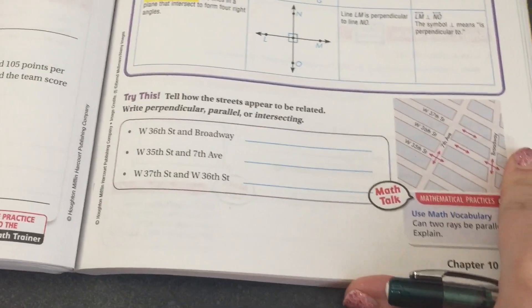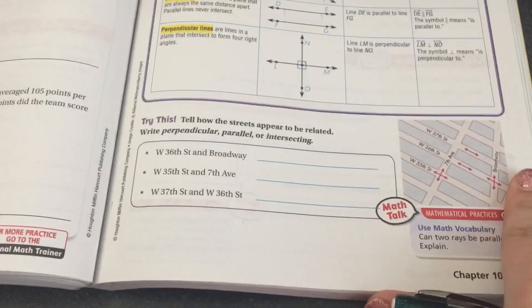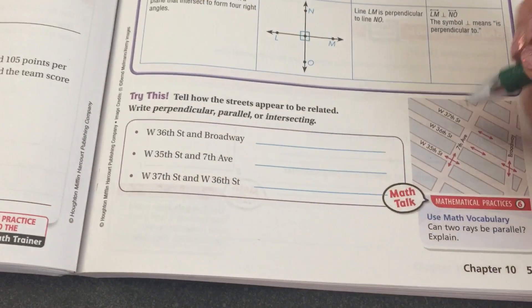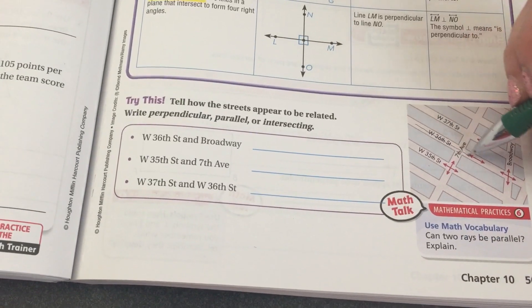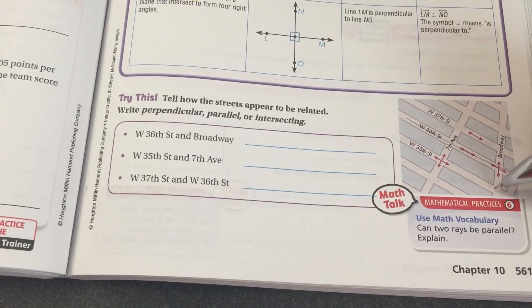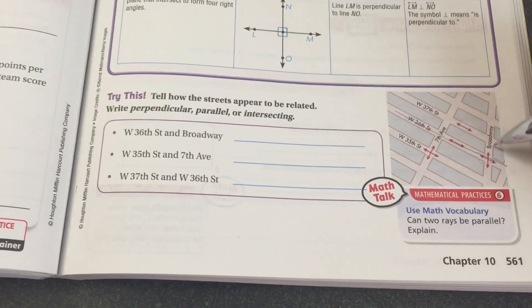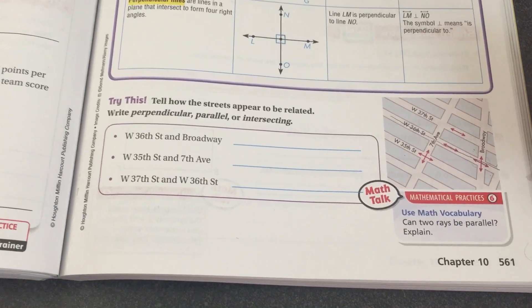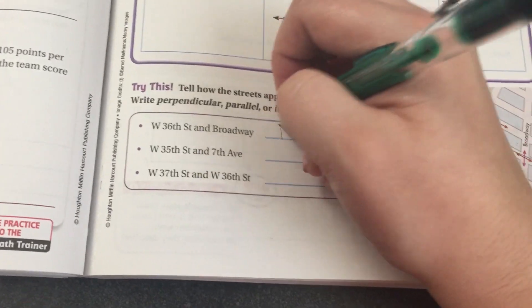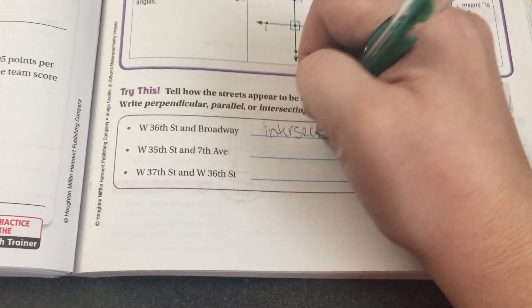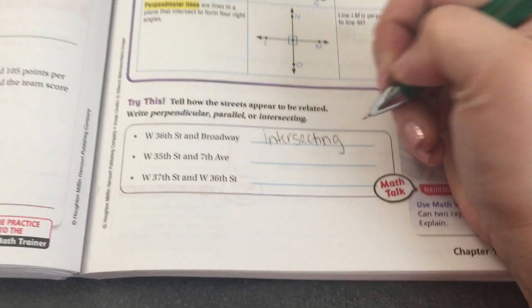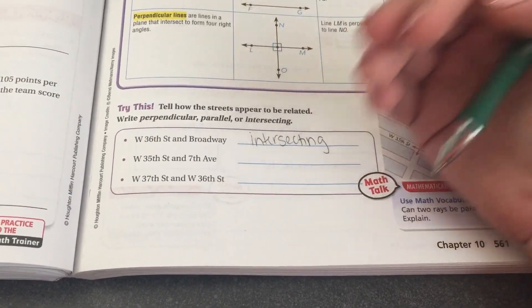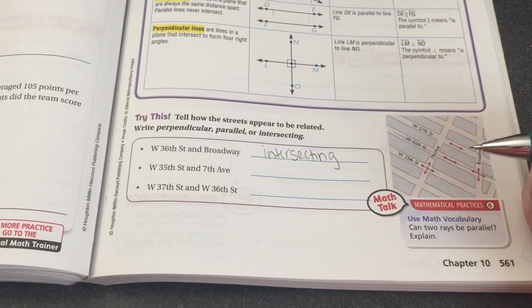It says tell how the streets appear to be related — perpendicular, parallel, or intersecting. We have 36th Street and Broadway. Here's 36th Street going down to Broadway. There's an obtuse angle, an obtuse angle, an acute angle, and an acute angle. These are not right angles, but they do cross each other, which means those two streets are intersecting — like when you're driving and you get to an intersection where the lights are and you cross another street.